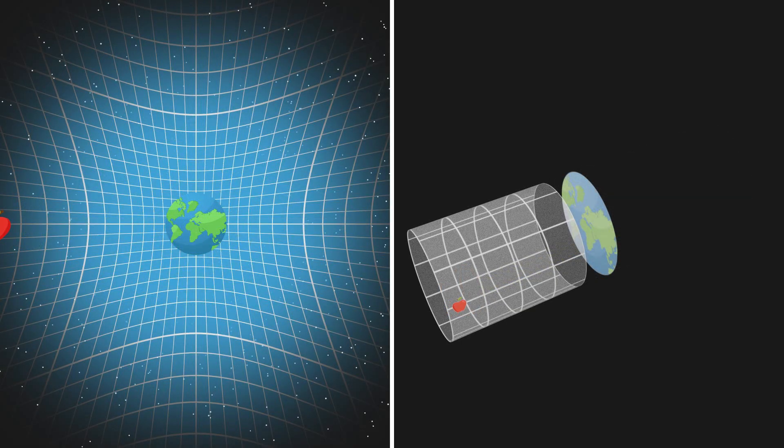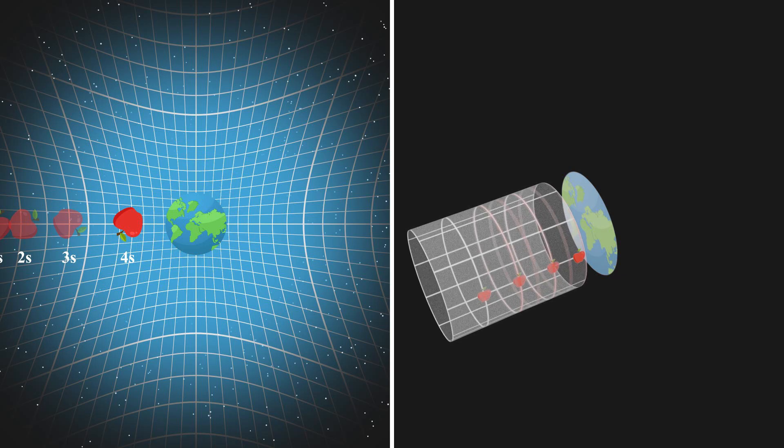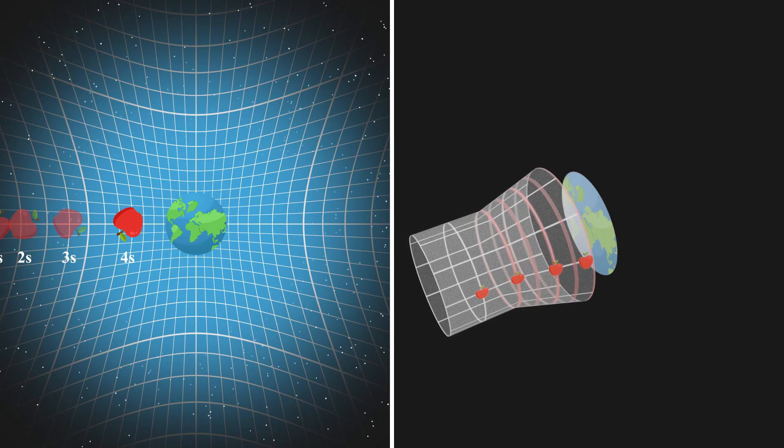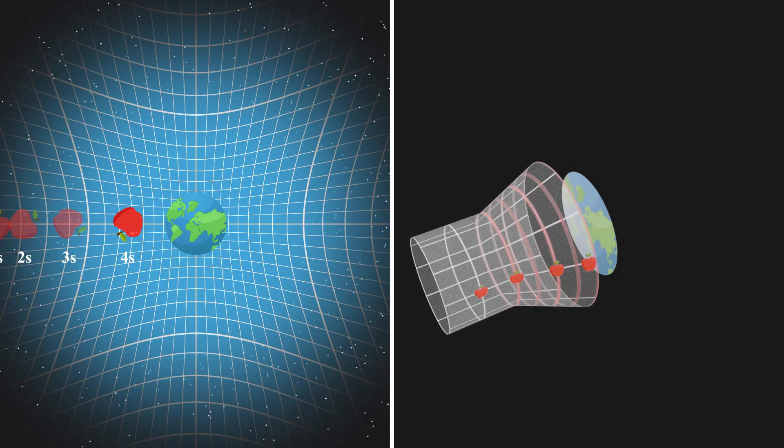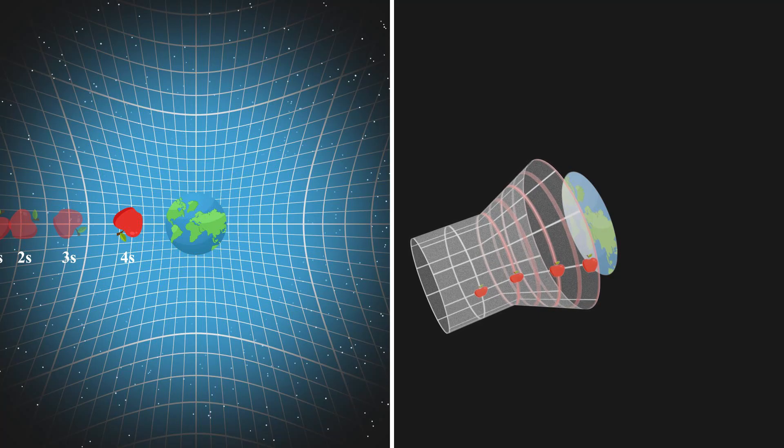As the apple falls toward Earth, the curvature of spacetime around it increases due to Earth's mass. We observe that the apple's aging process slows down as it descends, meaning that each second for the apple stretches out when viewed by a stationary observer. This indicates that the perimeter of the spacetime cylinder becomes longer as the apple falls toward Earth. Thus, the cylindrical spacetime diagram expands into a cone shape, with the wider end at the bottom.